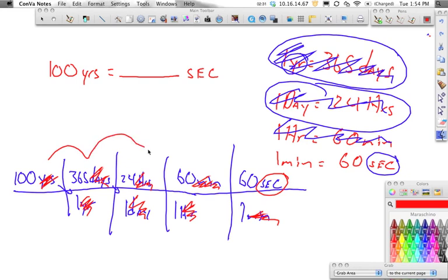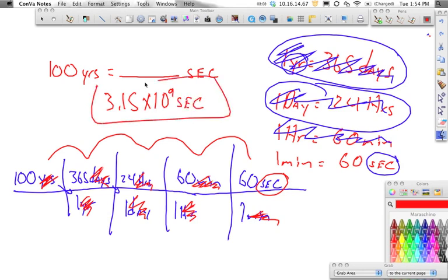So all I do is I multiply the top and divide by the bottom, which our bottom is going to be 1. So it's just 100 times 365 times 24 times 60 times 60. And I press enter, and I will get a very large number that I'll put in scientific notation, which is 3.15 times 10 to the ninth seconds.